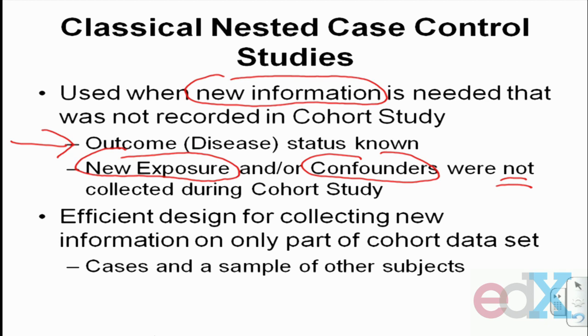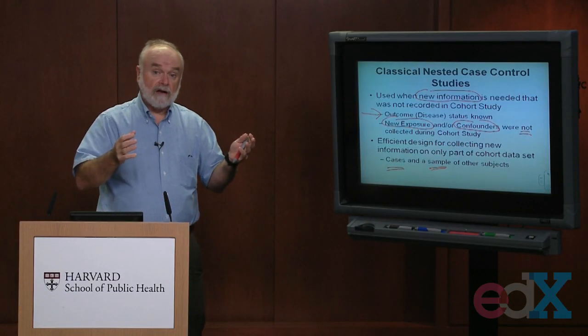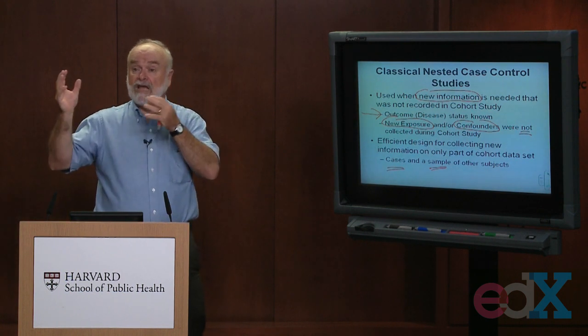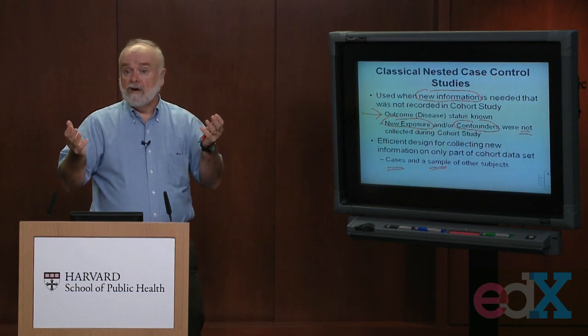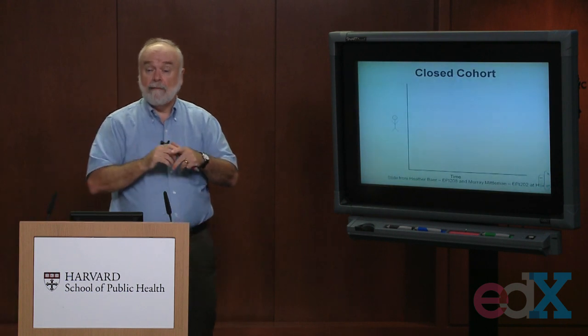We have two options: collect the new information on everybody in the cohort, or do it efficiently by collecting it on just a sample — the cases and controls. Who are the crucial people? First, those who got disease. Then, instead of collecting on everybody else, just collect it on a sample as controls. That's why we do classical nested case control studies — to address a new risk factor or collect information on an important confounder.